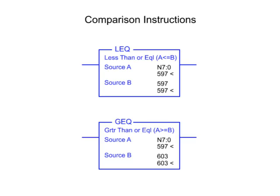A common method of temperature control is an on-off control system. Using comparison instructions in a PLC program, outputs are energized when the set point is reached.